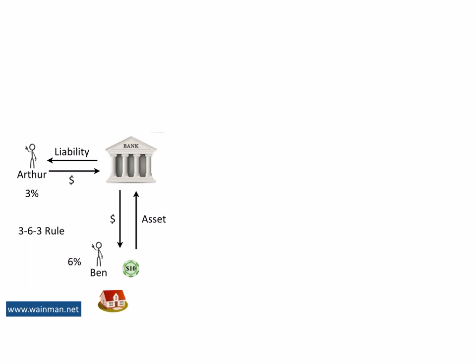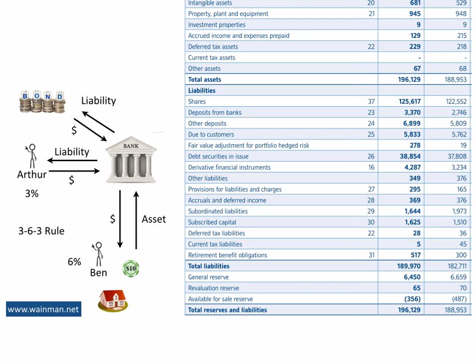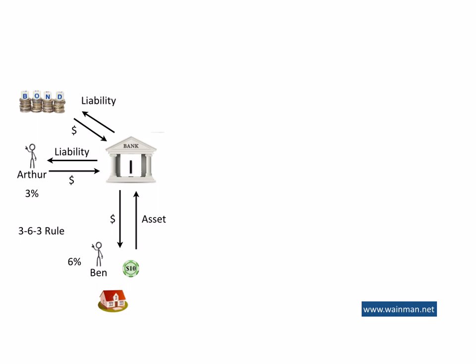The bank can also borrow additional funds to lend out by issuing bonds. As the money is lent to the bank, just like Arthur, these amounts will appear on the balance sheet as a liability. The second biggest liability is debt securities in issue — in effect, the money that the bank owes to the bondholders. Bank 1 can also borrow money from another bank, Bank 2. As the money is transferred from Bank 2 to Bank 1, Bank 2 will appear as a liability on the balance sheet of Bank 1.